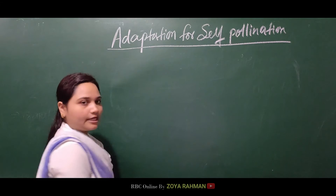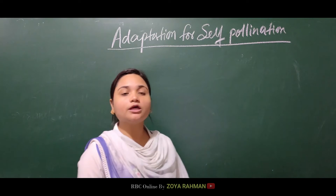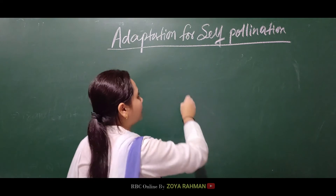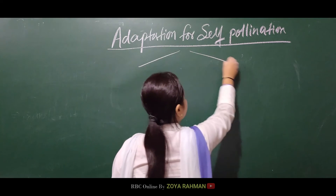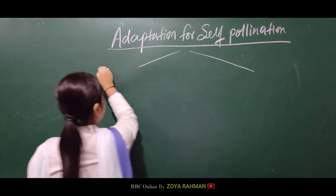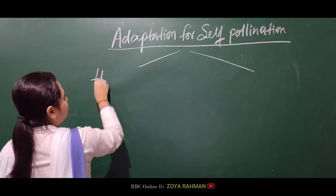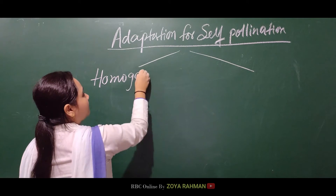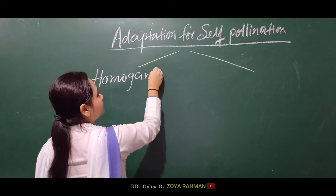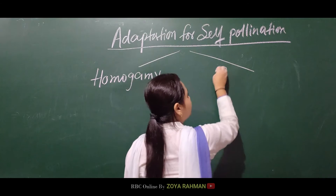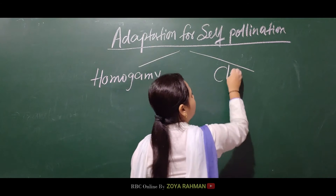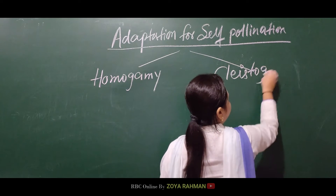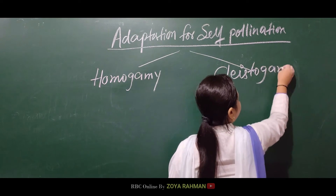For self-pollination to be maintained easily, we have two main types of adaptation. The first adaptation is called homogamy, and the other main adaptation is called cleistogamy. These are the two key adaptations for self-pollination.